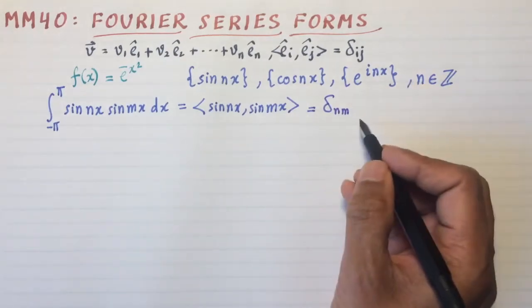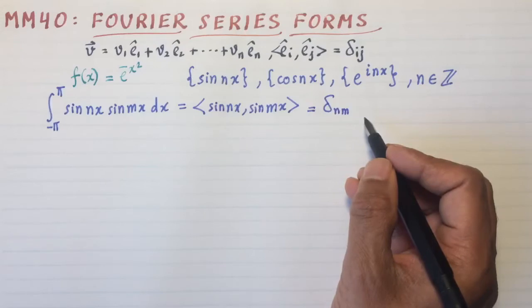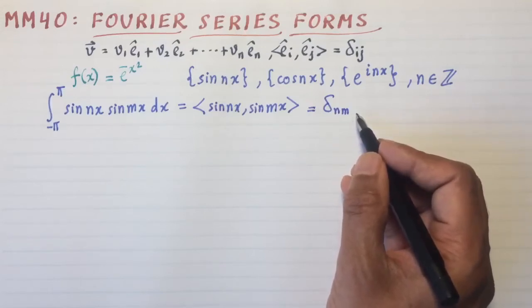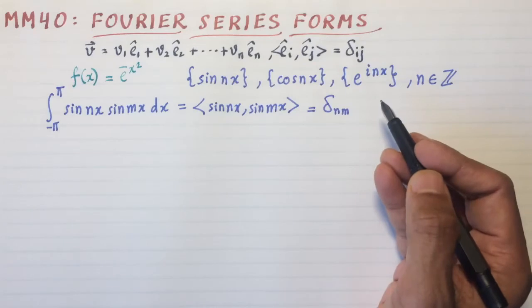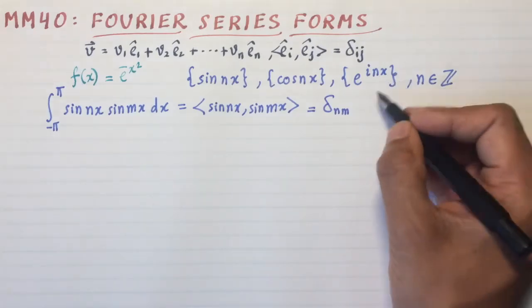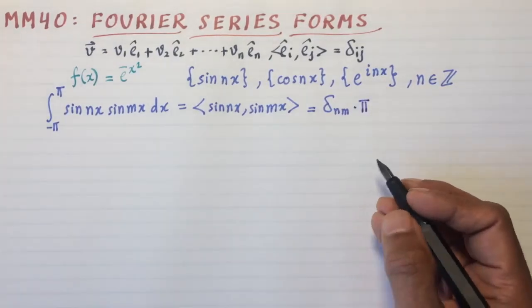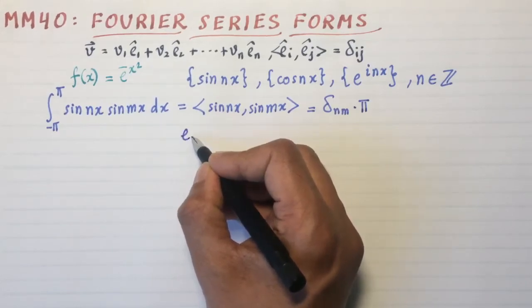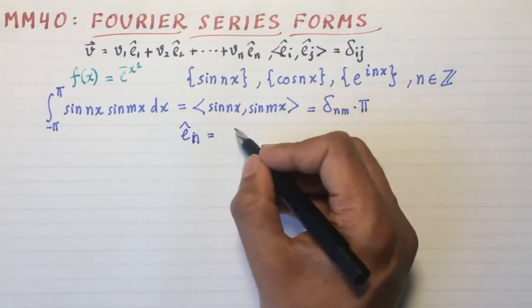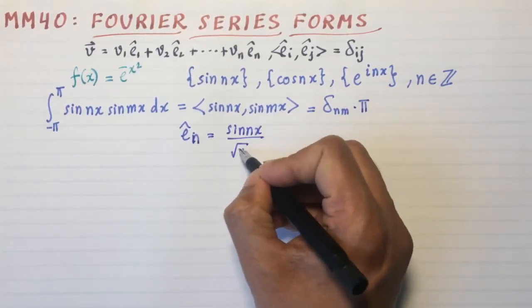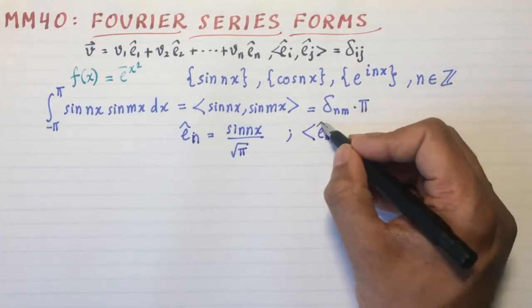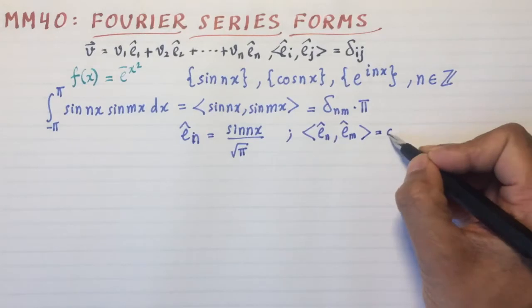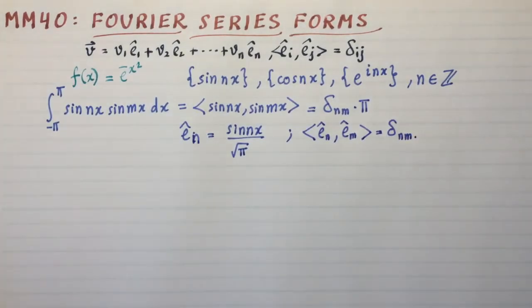This will turn out to be equal to δ_nm. In other words, it's equal to zero if n ≠ m, and it's equal to one if n = m. But there's a normalization constant, and so we'll have to think about that. That normalization constant is actually related to π. If you actually solve this problem, you'll get this factor of π. So you can define, if you want, unit vectors e_n hat as sin(nx)/√π. And then, with respect to this inner product, <e_n, e_m> will exactly be equal to δ_nm. So that's the beauty of Fourier's theorem, that you can do this.